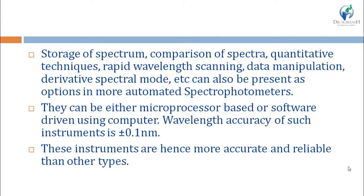In spectrophotometer, additional capabilities include storage of spectrum, comparison of spectra, quantitative techniques, rapid wavelength scanning, data manipulation, and derivative spectrophotometry. All these can be present as options in automatic spectrophotometers. They can be microprocessor-based or software-driven using a computer, making wavelength accuracy ±0.1 nm only. These automated spectrophotometers are more accurate and reliable than colorimeters and spectro-colorimeters.